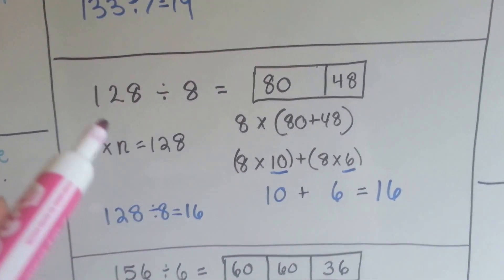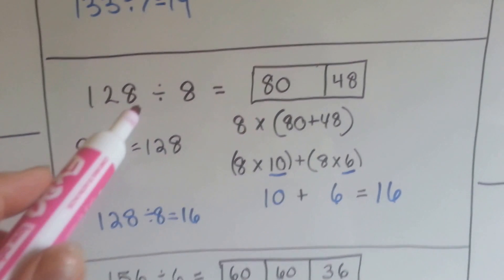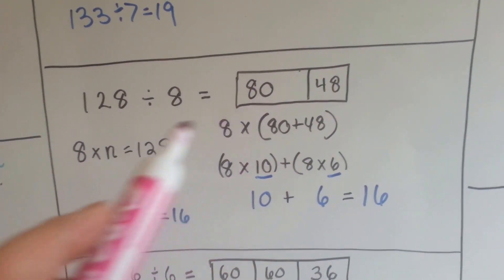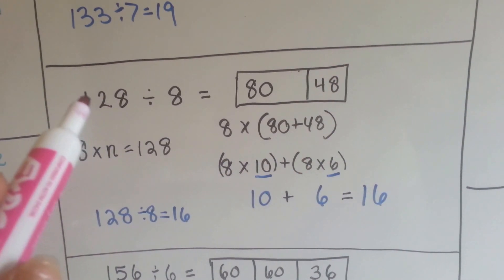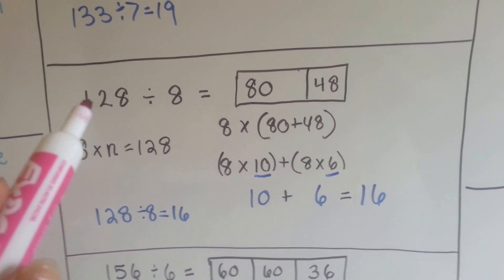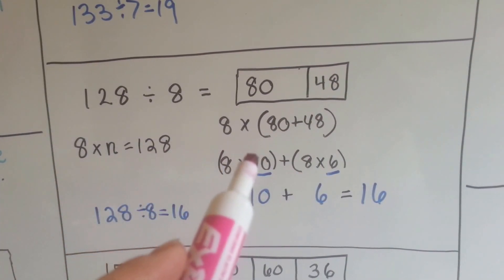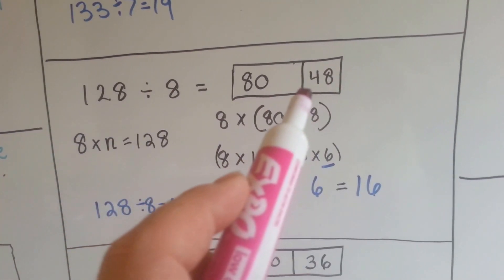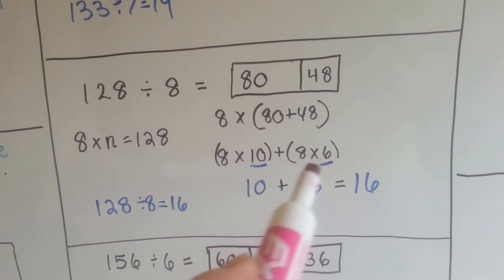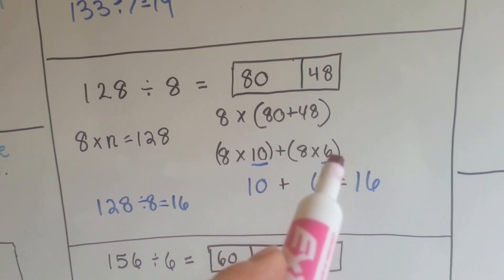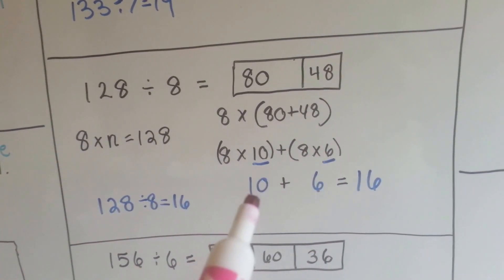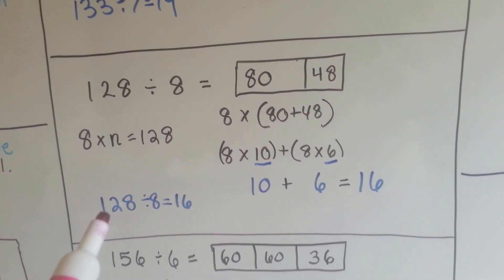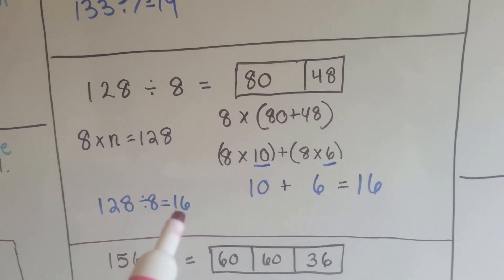Let's try it again. 128 divided by 8. Let's do 8 times 10, so we have 80, and we still have 48 left over to make 128. So I know I have 8 times 10. 8 times what is 48? 8 times 6. So now I pull the 10 and the 6 addends out, I add them together, they are 16. So I know that 128 divided by 8 equals 16.